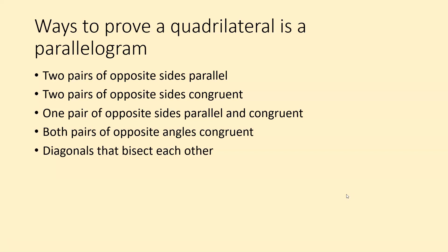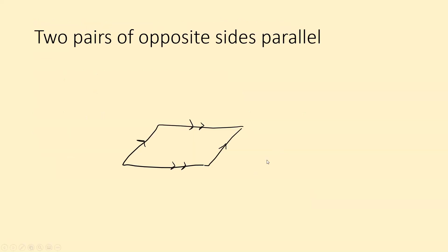Make sure you have these in your notes — I'm also going to go through what these look like visually. First, two pairs of opposite sides parallel: this side is parallel to this side, and this side is parallel to this side. This is essentially the definition of a parallelogram, so this one should be fairly obvious.